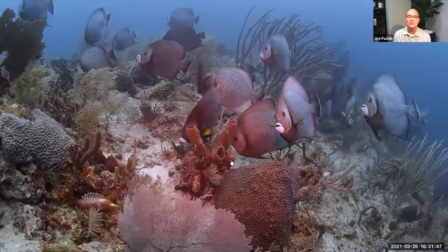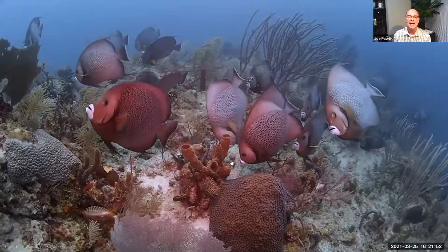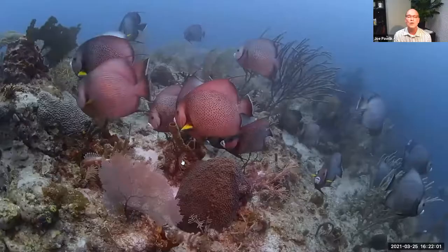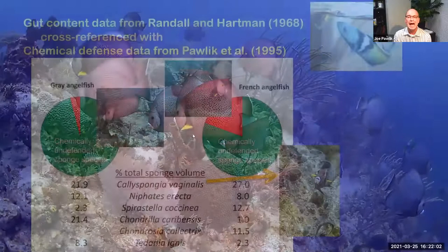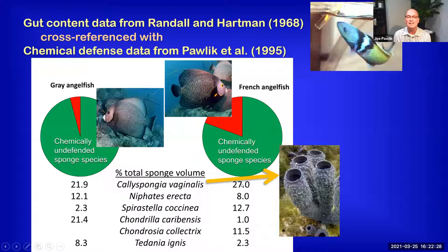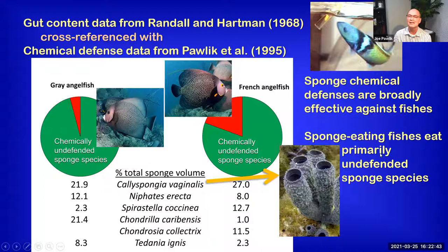We noticed that on some reefs where there were a lot of spongivorous fishes, those same undefended species were all nibbled down to little nubs on the substratum — this is Talispongia vaginalis, the gray tube sponge, which will keep popping up in this talk. These spongivorous fishes — a combination of gray and French angels — were really concentrating on the gray tube sponge. When we went back with our chemical ecology data and looked at the gut content data from Randall and Hartman, we discovered that sponge-eating fishes are concentrating their predatory effect on chemically undefended sponge species. The gray tube sponge represents 27% of French angelfish diets and 21% of gray angelfish diets.